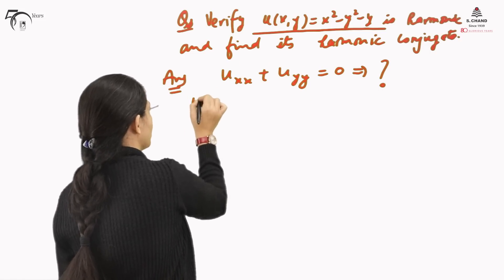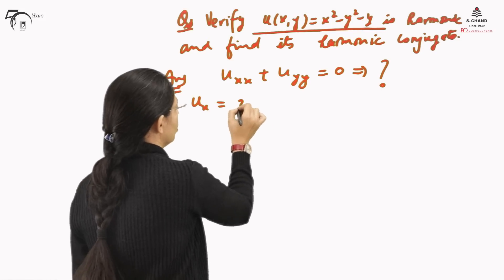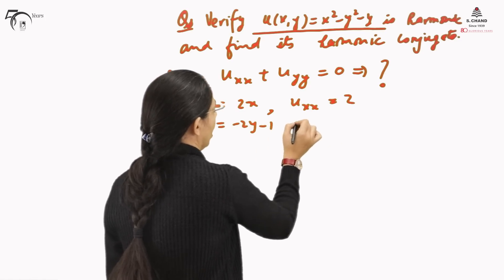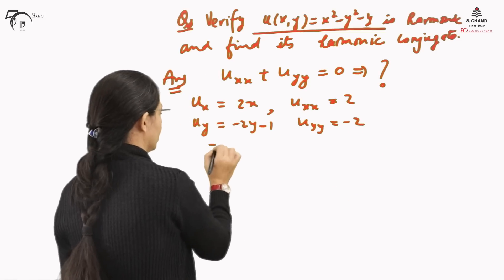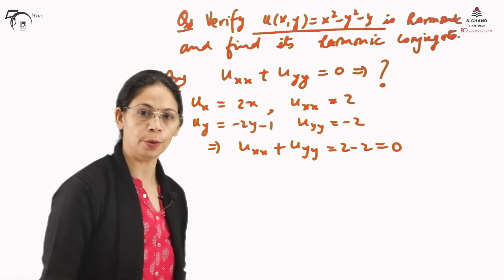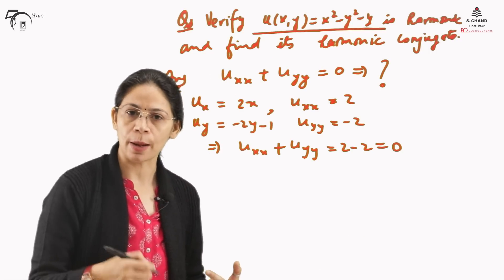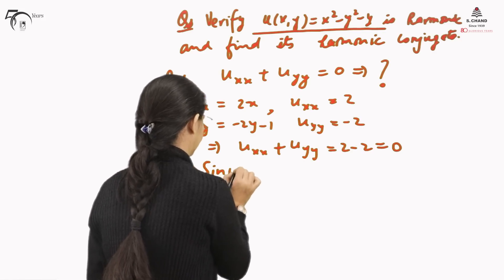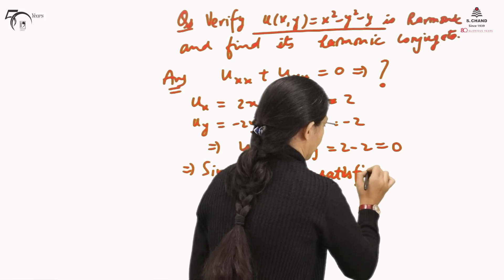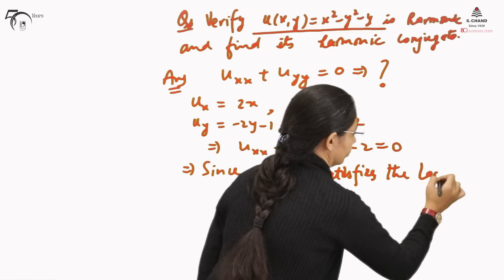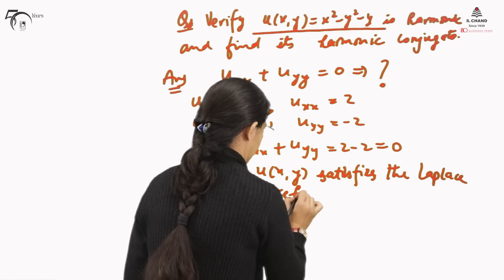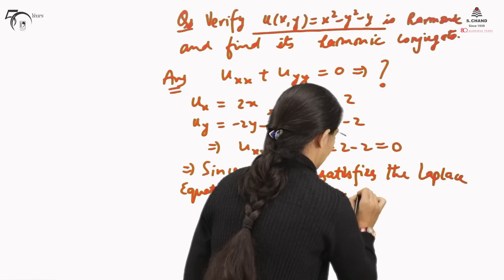First, we find the first-order partial derivative of U with respect to X: U_x = 2x, so U_xx = 2. Then U_y = −2y − 1, so U_yy = −2. Therefore U_xx + U_yy = 2 − 2 = 0. The given function U(x,y) satisfies the Laplace equation, and therefore it is harmonic.